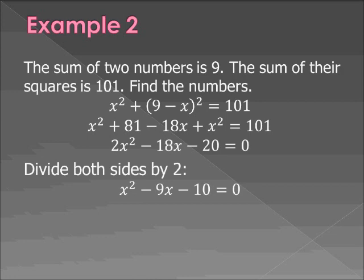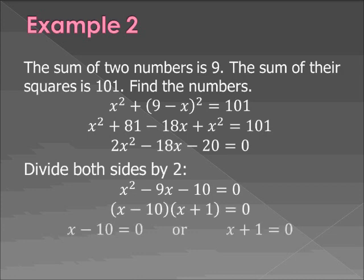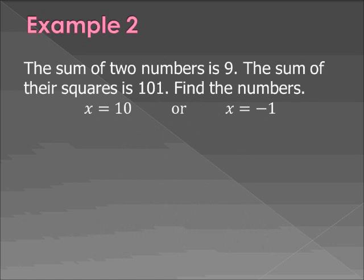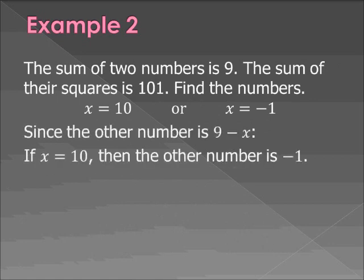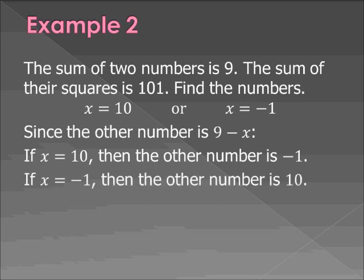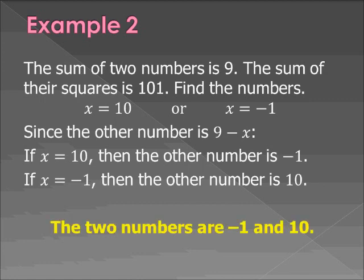So you get x squared minus 9x minus 10 equals 0. Again, you're going to look for two factors that multiply to negative 10, that add up to negative 9, which happens to be x minus 10 times x plus 1. So x is either 10 or negative 1. Now we need to figure out what the other number is. So since the other number is 9 minus x, if x is 10, the other number is negative 1. If x is negative 1, then the other number is 10. So we're basically getting the same answer twice. So the final solution, the two numbers are negative 1 and 10. So sometimes this will happen. You get two answers, and when you substitute to try to get the other one, you're going to get the one you solved already. So in this case, there's only one solution. Whereas in example 1, there were two.